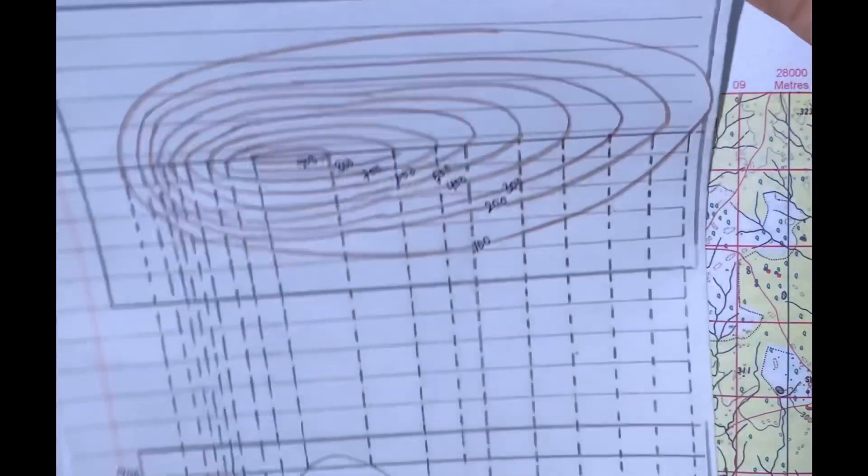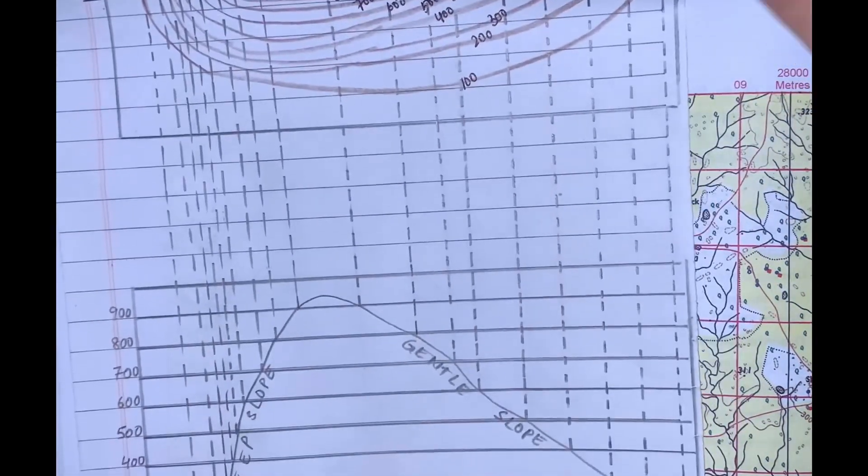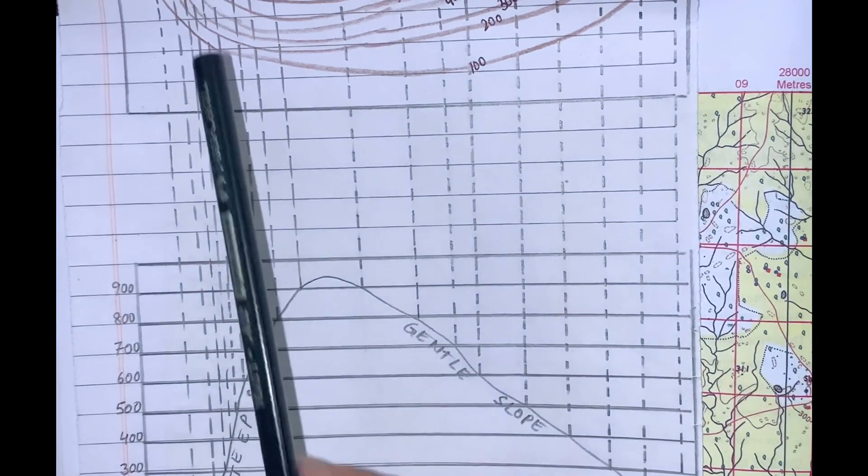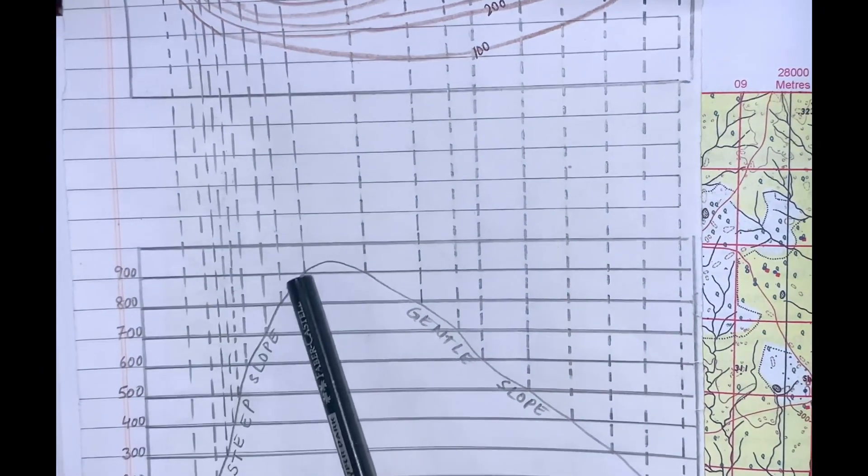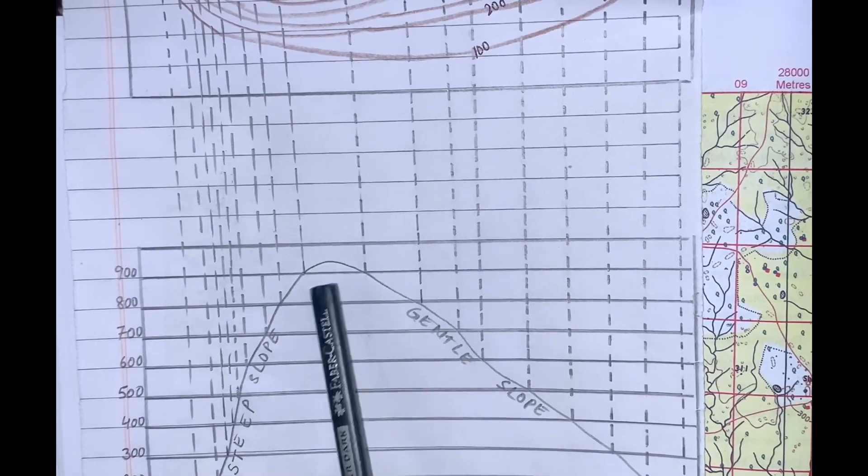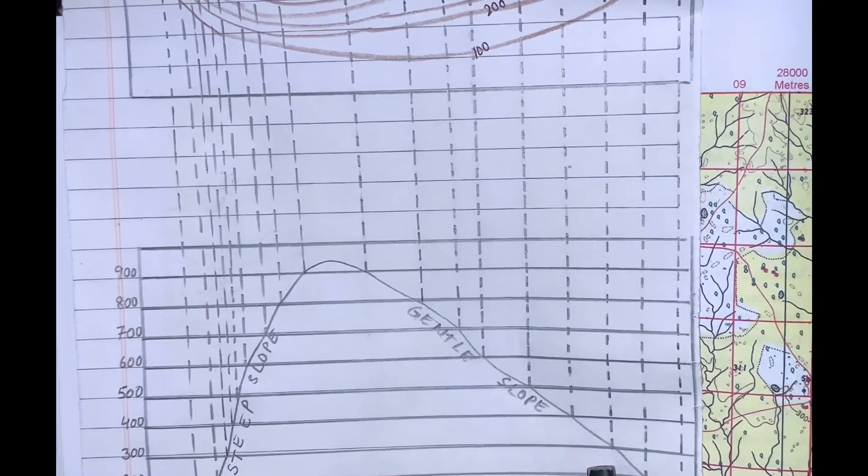You can see in this diagram, with the help of this cross section, I have shown you that when the contour lines were very close, the slope is steep. Whereas when the lines were far from each other, the slope is gentle.